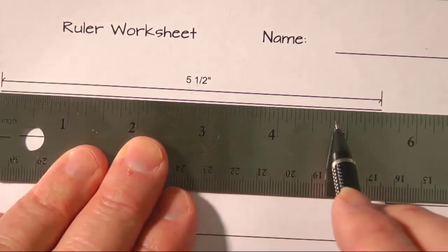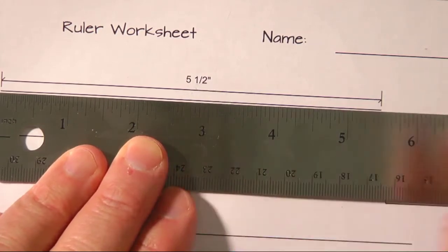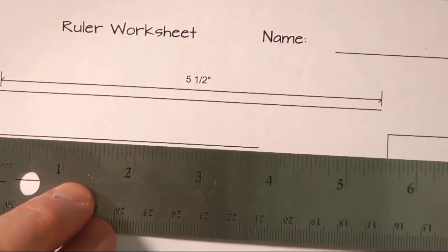So we've got from zero to five, and then a half inch, so that's why it says five and a half inches. Let's take this and measure the next line that doesn't have a measurement written on it.